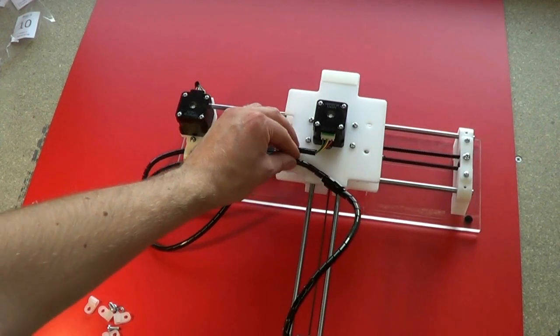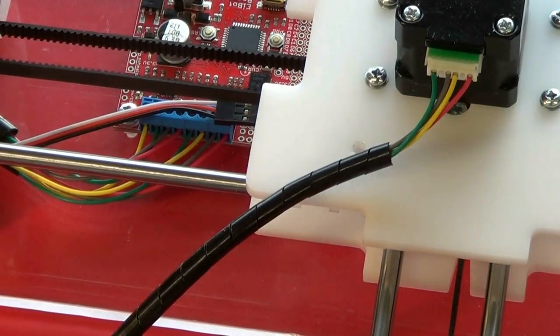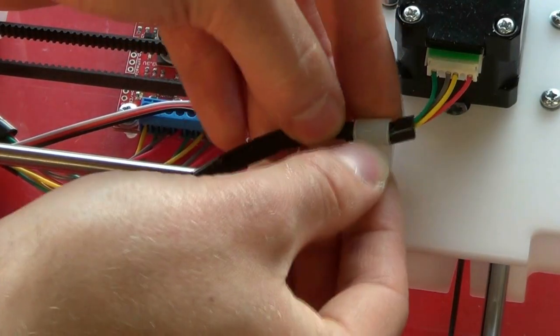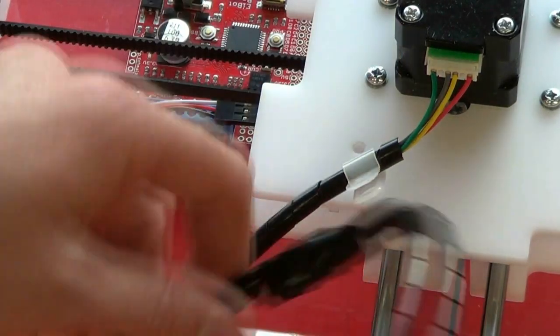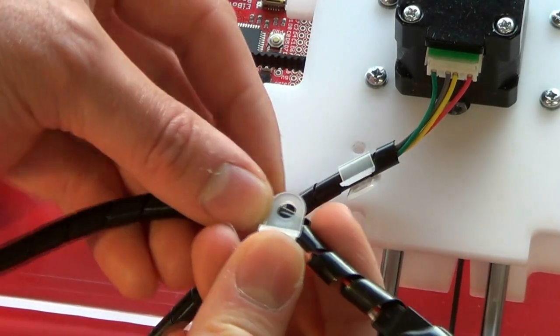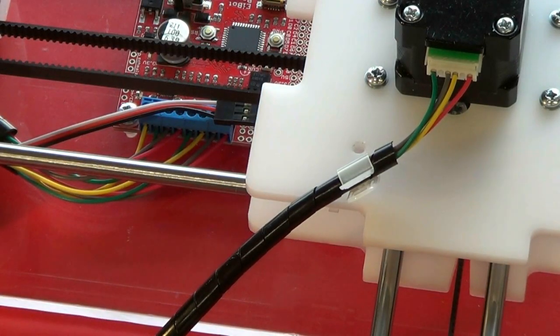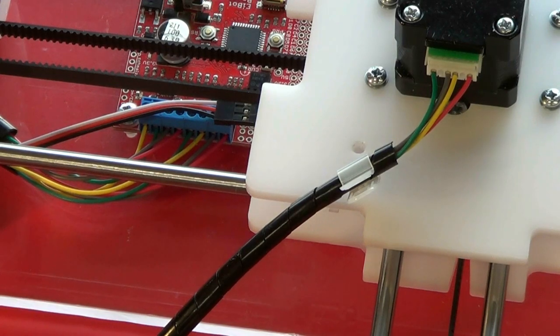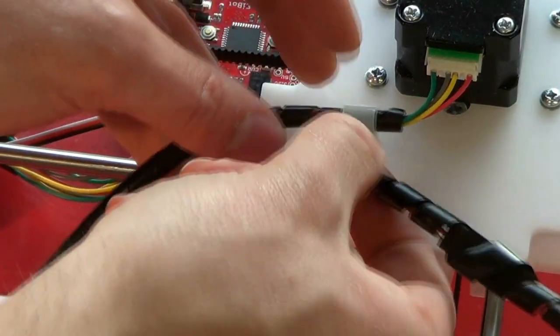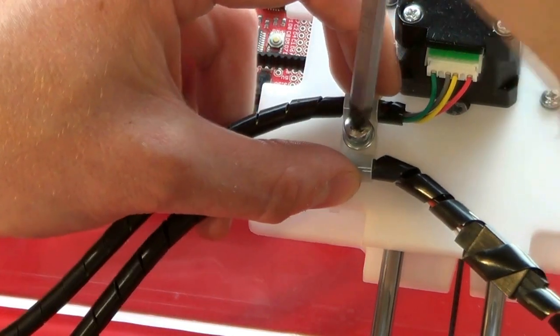Once you're satisfied it's well out the road, you can then mount both of them with cable clips. One there and one about there. One screw through both of the cable clips and screw it to the top of the Y-carriage, the top of the main carriage.